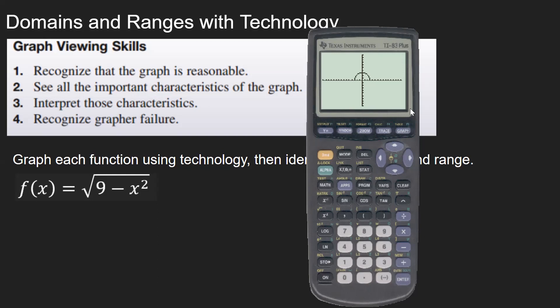the viewing window on a TI-83 is not an exact square. So if you're going from negative 10 to 10 on the x and y axis, it's not actually going to show you an accurate picture. Then we can zoom in a little bit on this. And you'll see that this is a semicircle, half a circle.